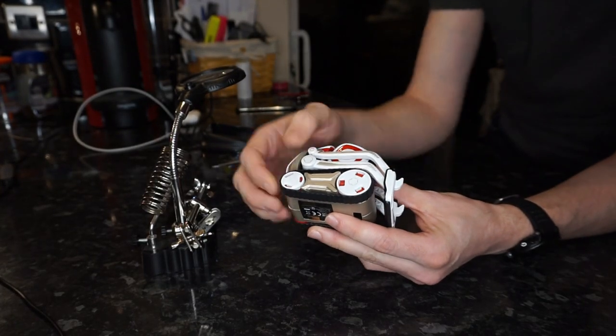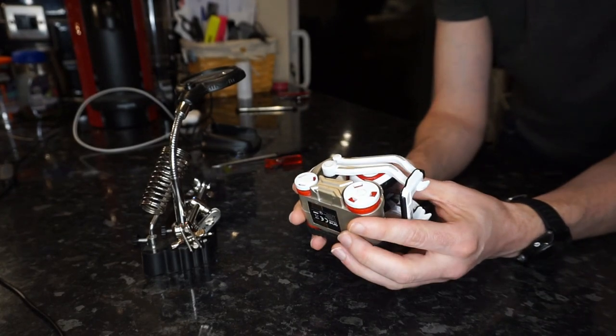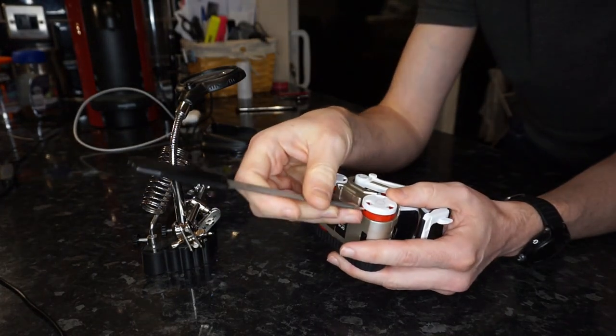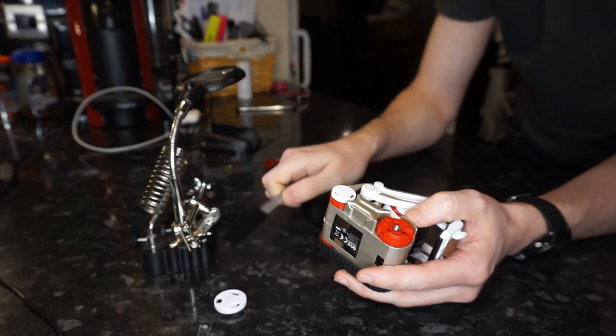Okay, so this is another 60 second fix video. This one relates to the wheels on the Cosmo robot. This robot was sent to me recently because someone had tried to replace the battery, and the first wheel they had come to, they had actually stripped the screw, so they couldn't go any further. They'd sent it to me to see if there's anything I could do with it.